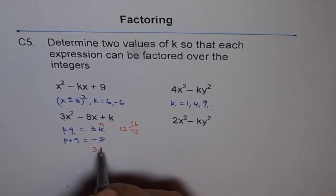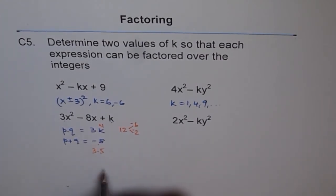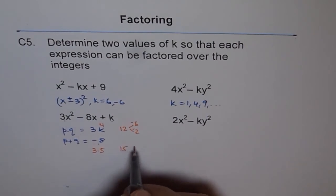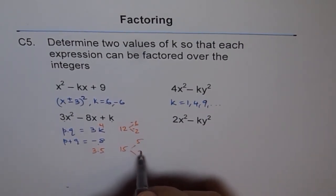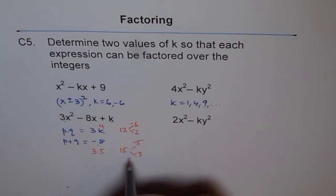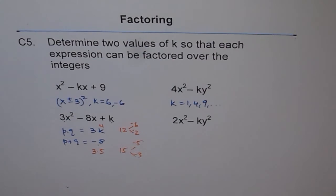We could use 3 times 5. 3 times 5 is 15. And for 15, to get minus 8, 5 times 3. And both negative will give me minus 8 to add, correct? So those are my two options.